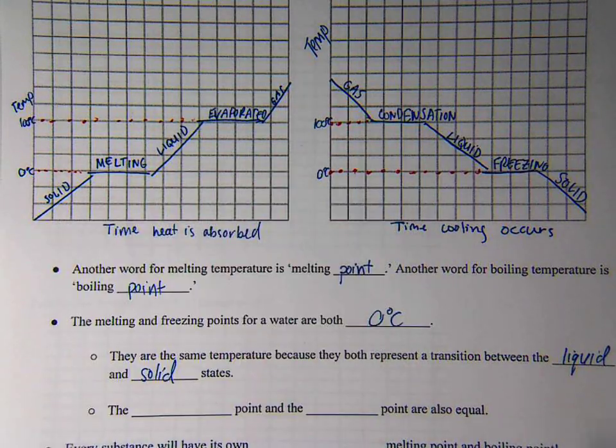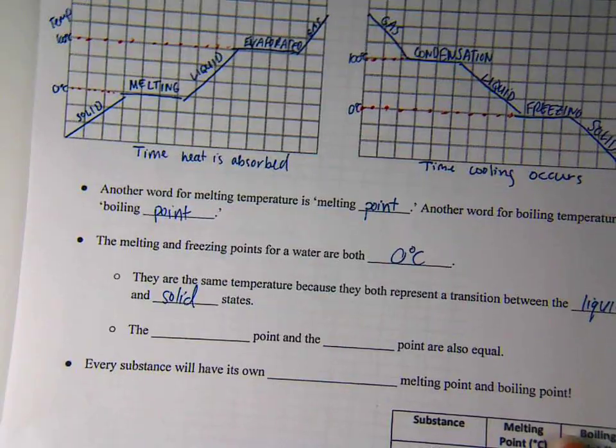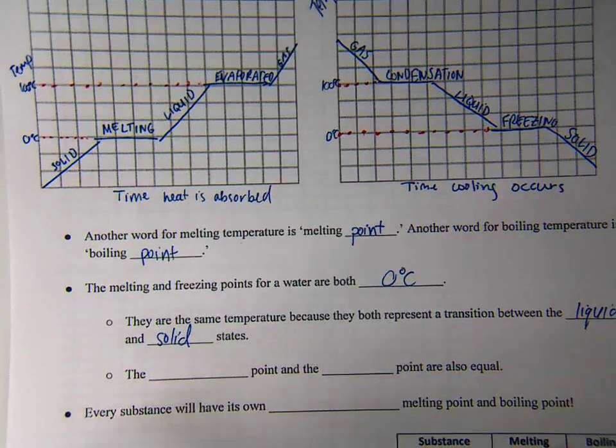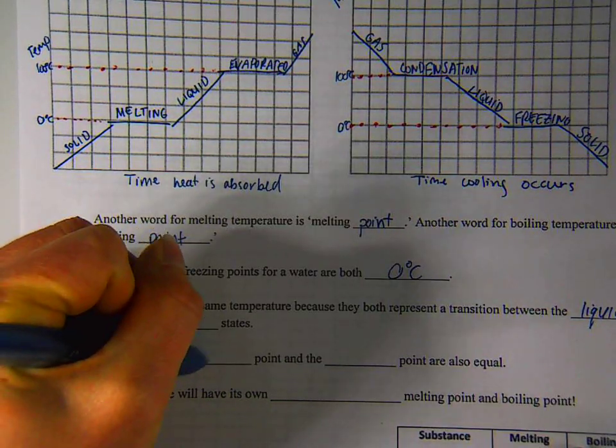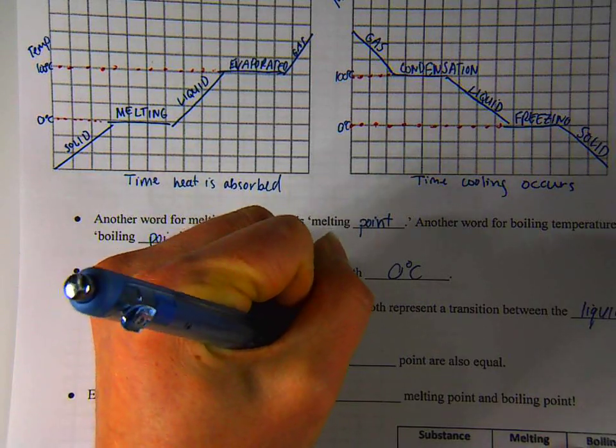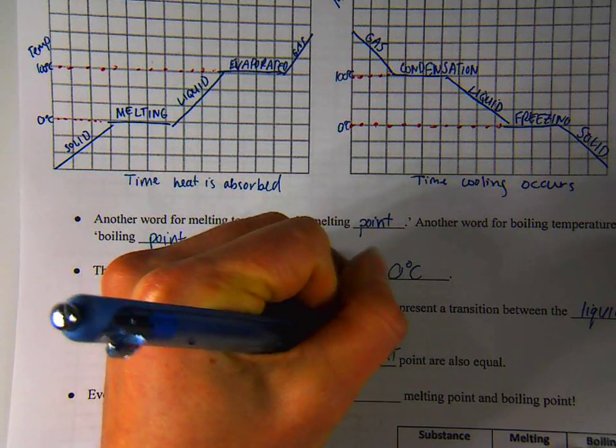We give them two different names, but they're the same exact temperature. So you'll also notice that the condensation and the evaporation point, or the boiling point is what I'll call that evaporation point, are equal. Same idea here.